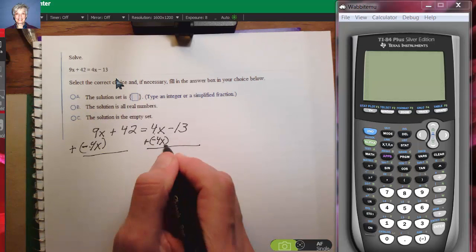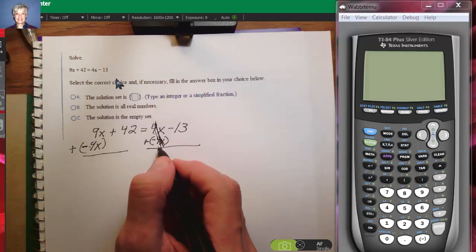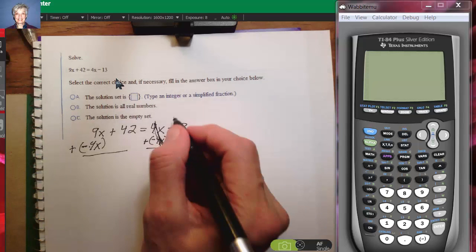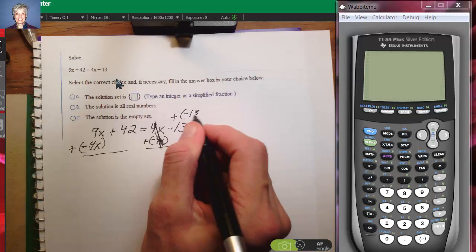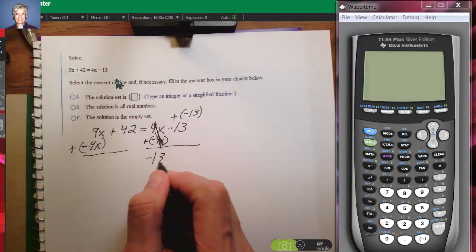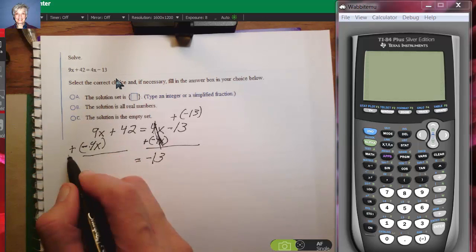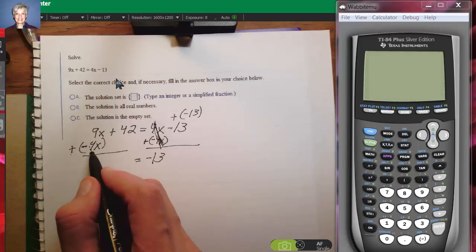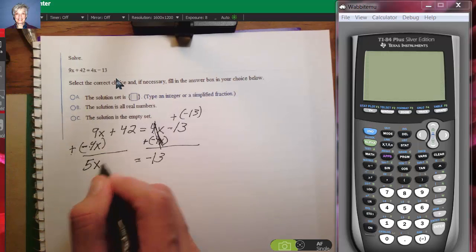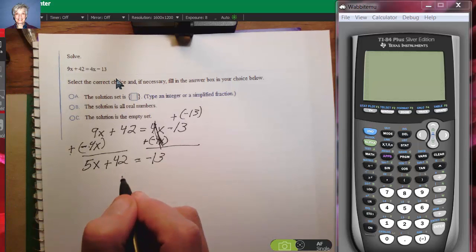Then 4x plus negative 4x zeroes out because they're opposites. Whenever you add opposites, you get zero and you're left with negative 13. Over here you're going to have 9x plus negative 4x. 9 plus negative 4 is positive 5. So this will be 5x plus 42. We've got step 1 done.